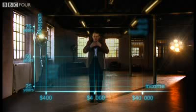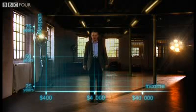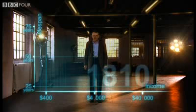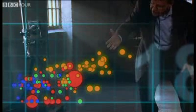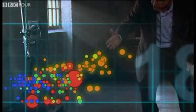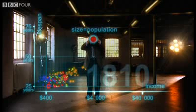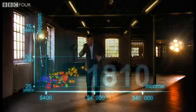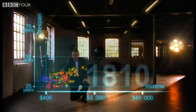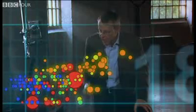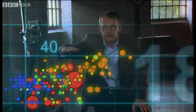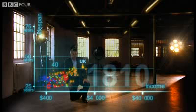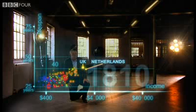Now, I'm going to show you the world 200 years ago, in 1810. Here come all the countries: Europe brown, Asia red, Middle East green, Africa south of Sahara blue, and the Americas yellow. The size of the country bubble shows the size of the population. And in 1810, it was pretty crowded down there — all countries were sick and poor. Life expectancy was below 40 in all countries, and only the UK and the Netherlands were slightly better off, but not much.